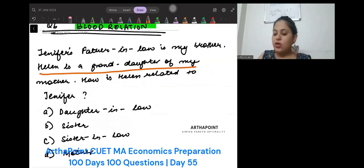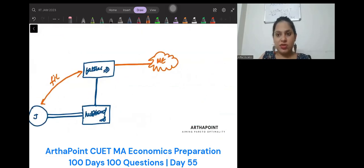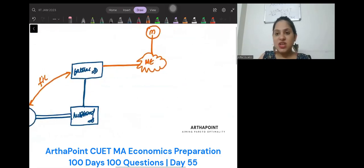Helen is granddaughter of my mother. So just see this. This person whoever he or she is has a mother. So mother. Helen is granddaughter of my mother. So I am son or daughter of my mother. And Helen.